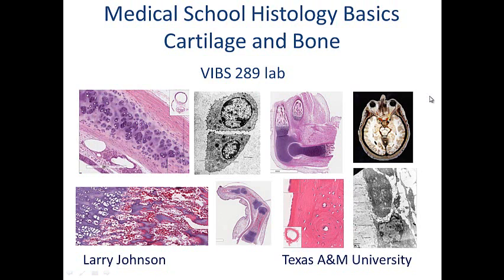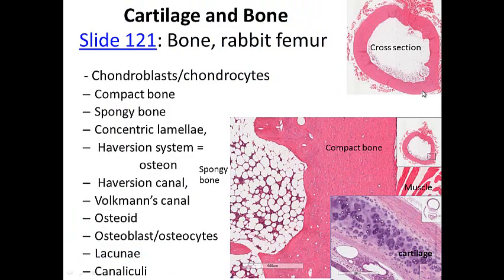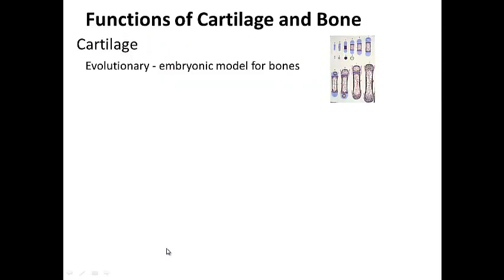Hi, I'm Larry Johnson, a professor at Texas A&M University. There's a host of cells we have to be able to identify: chondroblasts, chondrocytes, osteoblasts, osteocytes, and osteoclasts. There's also spongy bone, compact bone, cartilage, and perichondrium — various things we'll talk about today. The function of cartilage and bone is what we need to address.